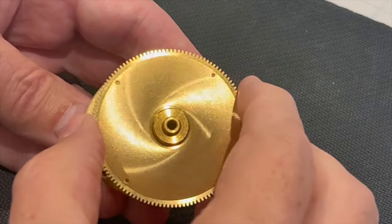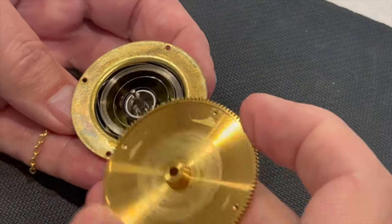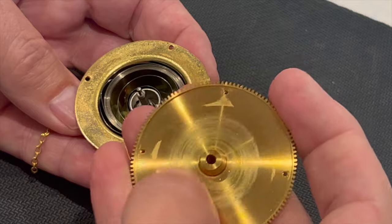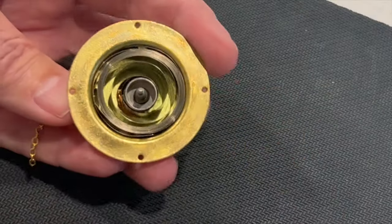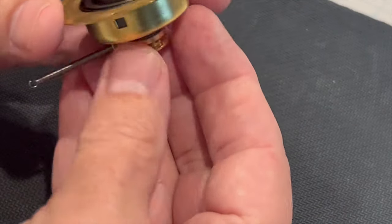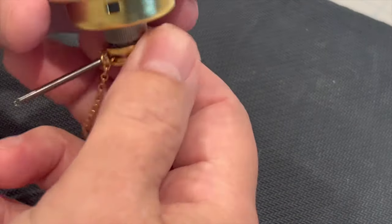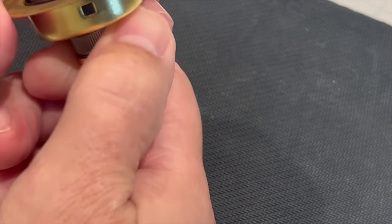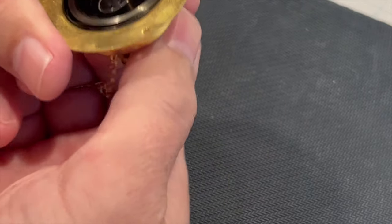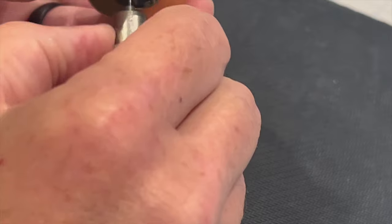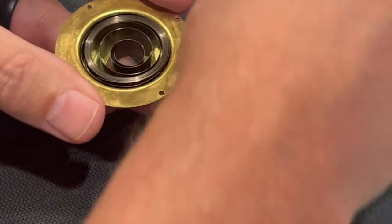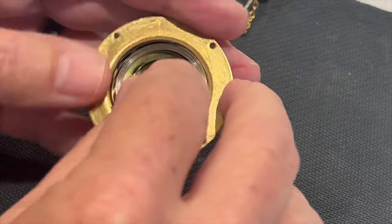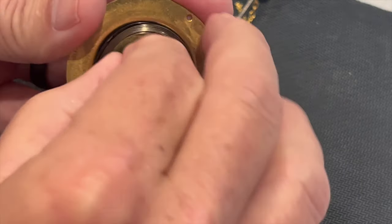So next we're going to remove these four screws from the barrel and begin to unwind the spring out of the barrel. Okay, the screws have been removed. Looks like we have a little bit of grease here. And we're going to remove the arbor. Okay, I just turned the arbor in the opposite direction. And now we're going to remove the mainspring.